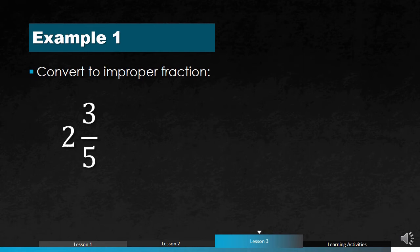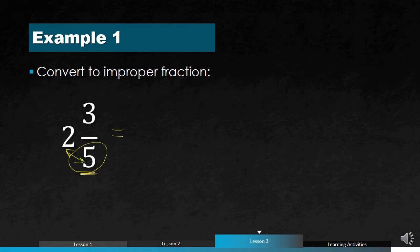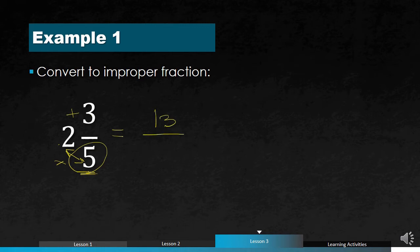Now let's consider this example: we have 2 and 3 fifths, which is a mixed form, and we will convert it into an improper fraction. To do that, we multiply the denominator — which is 5 — by the whole number, which is 2, giving us 10. Then we add the product to the numerator: 5 times 2 is 10, plus 3 gives us 13. So 13 will be your numerator, and you simply copy the denominator, which is 5. Therefore, 2 and 3 fifths equals 13 over 5.